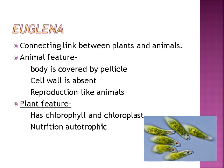Euglena — it is the connecting link between plants and animals. Animal features: body is covered by pellicle, cell wall is absent, reproduction like animals. Plant features: it has chlorophyll and chloroplast, and nutrition is autotrophic.